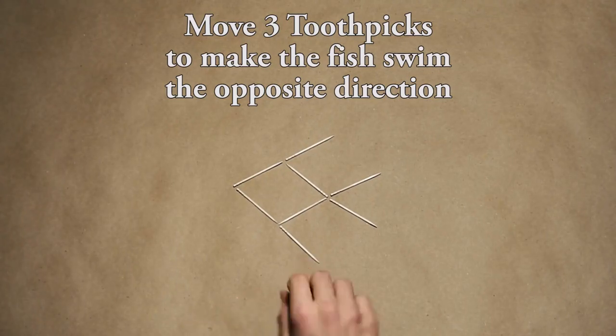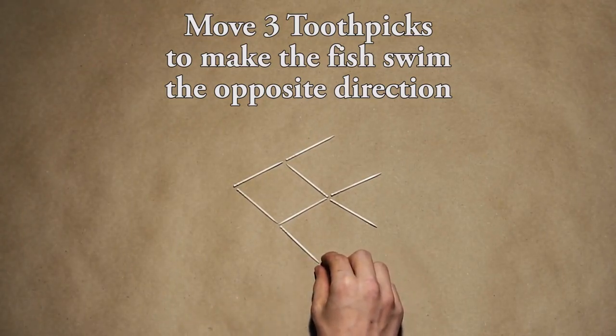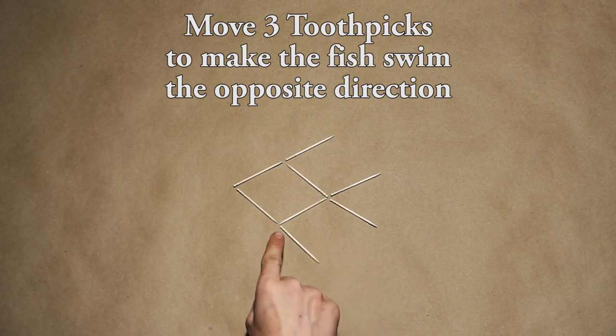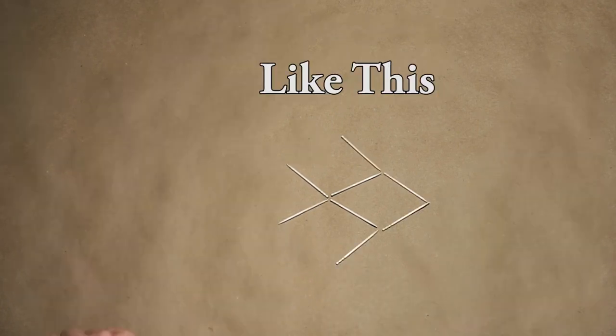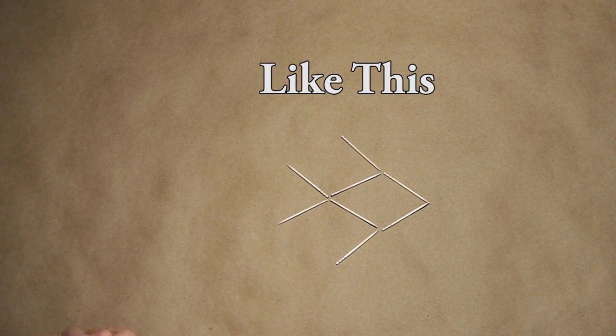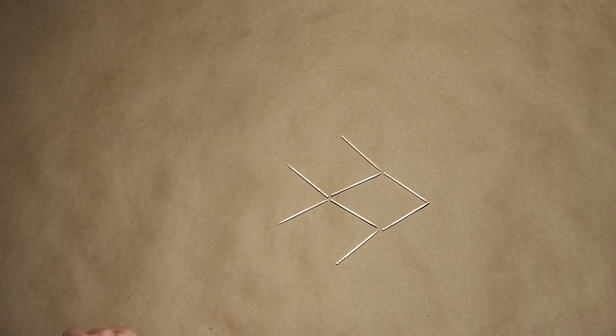Puzzle number one, the fish. Moving only three toothpicks, you've got to make this fish that's swimming that way swim the opposite direction. If you want, you can pause the video and I will have the answer at the end.